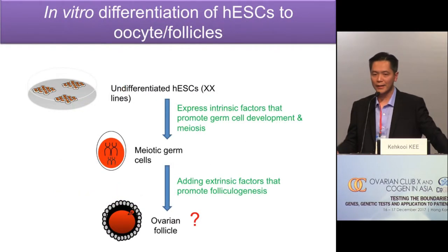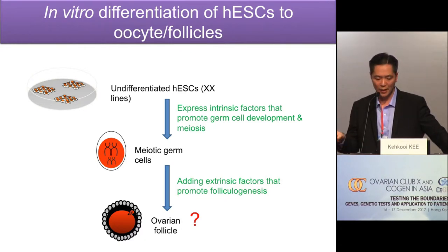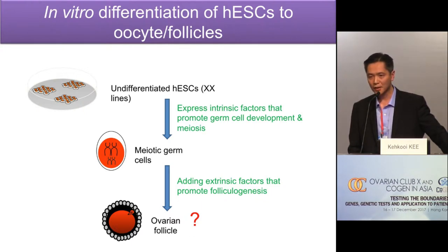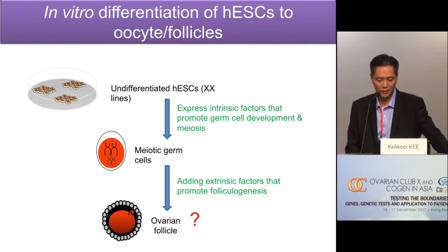Can we apply this to our goal of in vitro differentiating human embryonic stem cells to oocytes? If we can first induce cells using BMP extrinsic factors to make them into PGC, then induce them into meiotic germ cells with DAZL, we should be able to get early meiotic germ cells. Then, adding other extrinsic factors such as BMP15 and GDF9 to promote folliculogenesis in the in vitro culture system — this is our strategy, simplified in this figure.